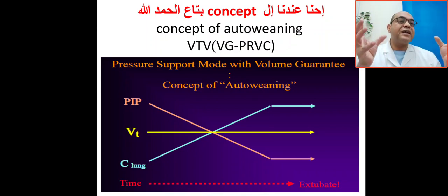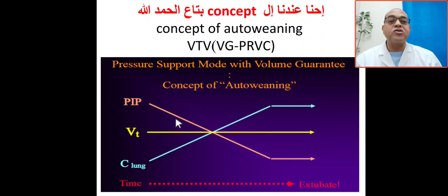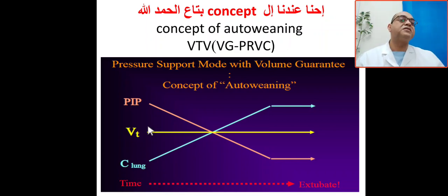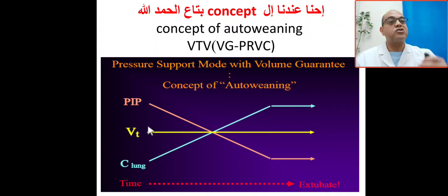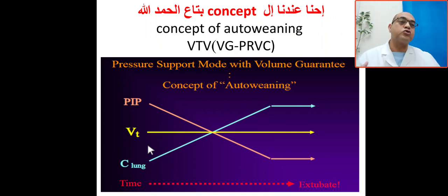The concept of auto-weaning is that pressure will prevent or decrease barotrauma. Auto-weaning will also help to prevent volutrauma. Barotrauma and volutrauma prevention will also prevent biotrauma, which is the inflammatory process. So it will prevent ventilation-induced lung injury or ventilation-associated lung injury. And it will help for lung protective strategy and lung recruitment strategy.